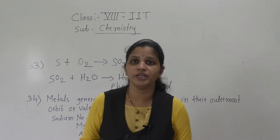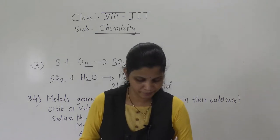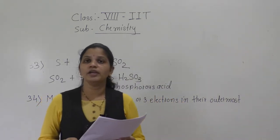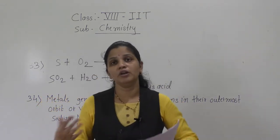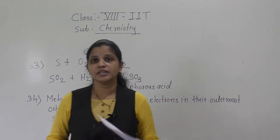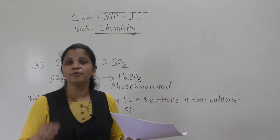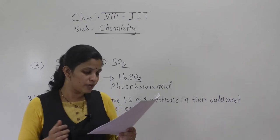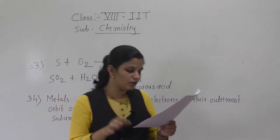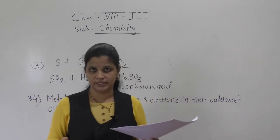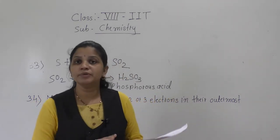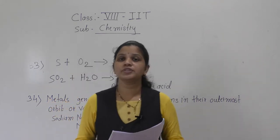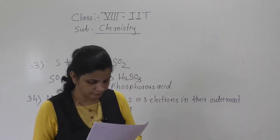Question number 24: common brass is an alloy of what? An alloy is a mixture of more than one metal. Brass is an alloy of copper and zinc — it is a mixture of copper and zinc. So option C is correct.